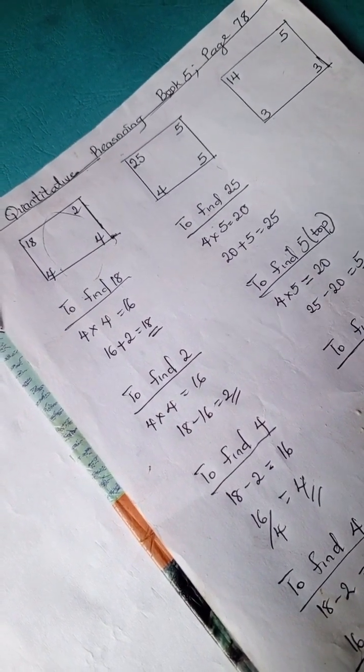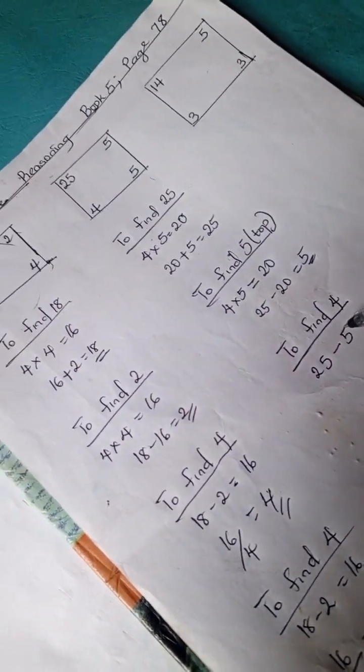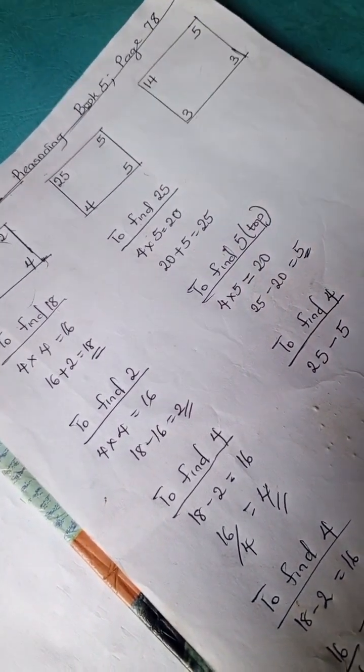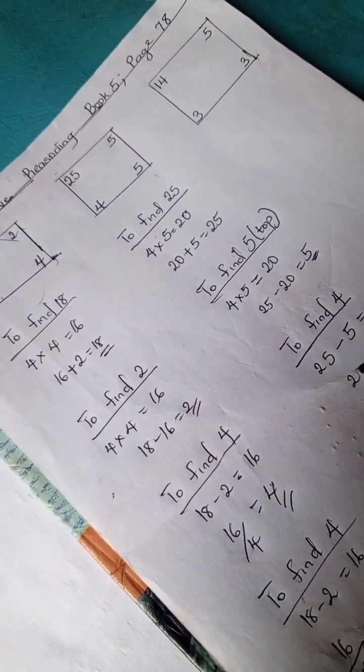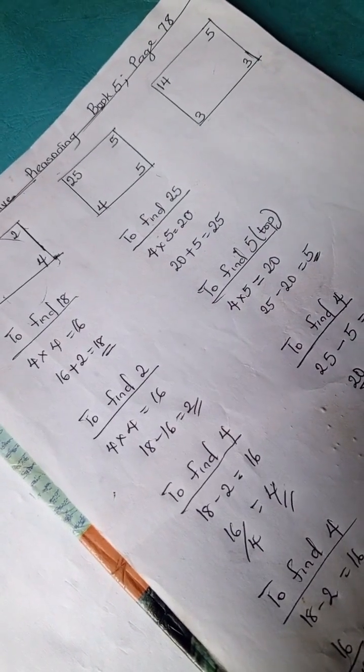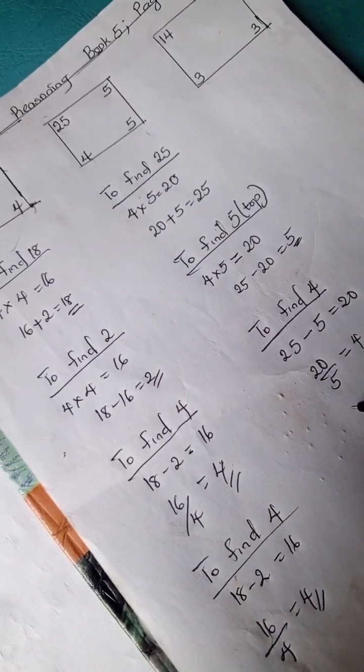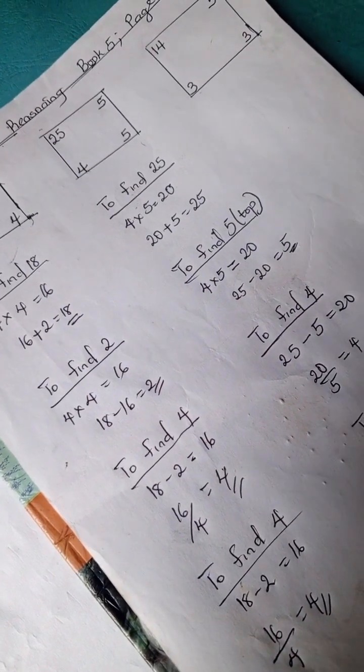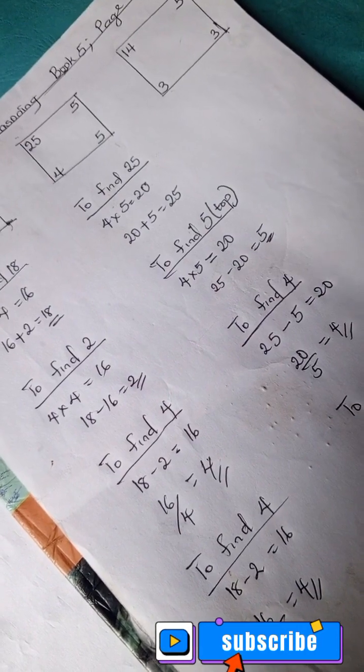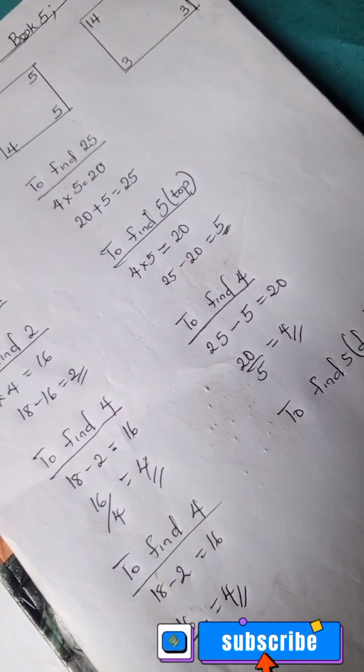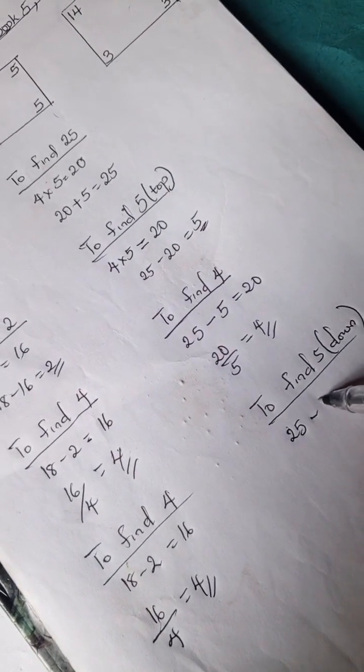To find 4, let's do that. 25 minus 5 at the top equals 20. Hence 20 divided by the 5 down gives us 4. Okay, so same goes for the 5 down. Let's use this to indicate. So we have 25 minus 5 is 20. 20 divided by 4 is 5.